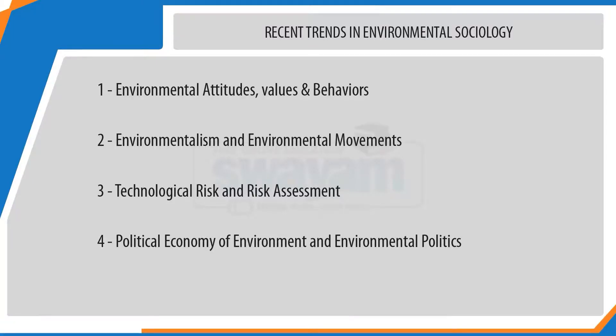While environmental sociologists deal with different topics, they deal with very broad areas of research. We may broadly identify four different areas or recent trends of research in environmental sociology, which constitute the subject matter of contemporary environmental sociology. These four areas include: one, environmental attitudes, values and behavior; two, environmentalism and environmental movements; three, technological risk and risk assessment; and four, political economy of environment and environmental politics.